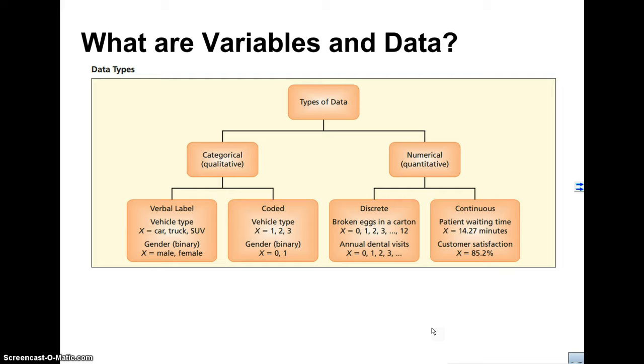Data, on the other hand, are the actual values that we get from those variables that we obtain. So data would be the actual number of students that chose Frozen and those number of students that chose Toy Story. So that would be our data.